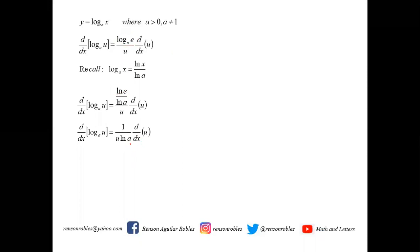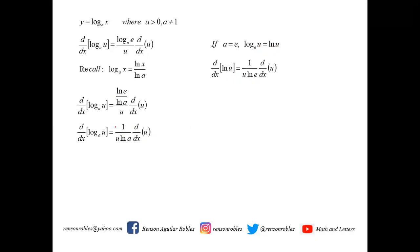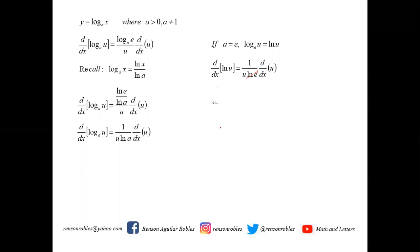If we replace a by e, then log of u to the base a becomes log of u to the base e, which equals ln of u — the natural logarithm. To find the derivative of ln u, we replace a by e in the formula: one over u times ln e times du/dx. Since ln e equals one, the derivative of ln u is simply one over u times du/dx, or du over u.